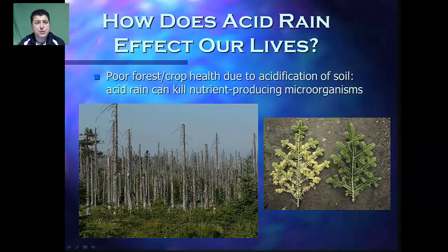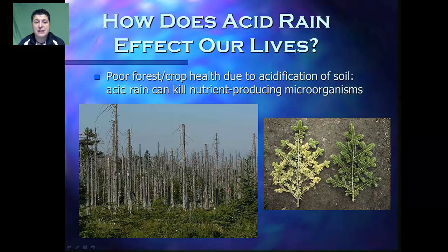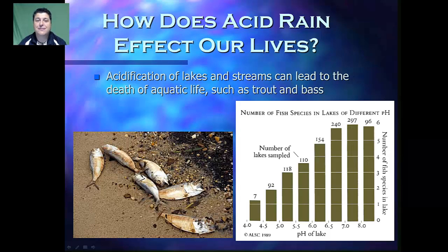Acid deposition affects both our economic and environmental lives. It can lead to poor forest and crop health due to the acidification of the soil. Acid rain and acid snow can actually kill the nutrient-producing microorganisms that fix nitrogen from the atmosphere. Acid deposition can also acidify lakes and streams, leading to the death of aquatic life like trout and bass, which have a very low range of tolerance when it comes to changes in pH.